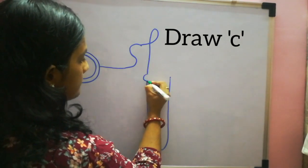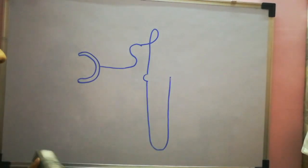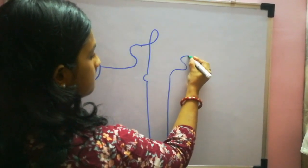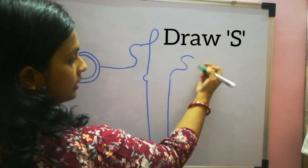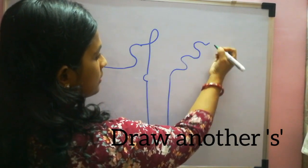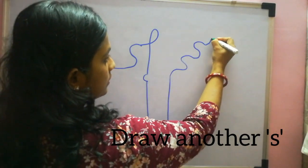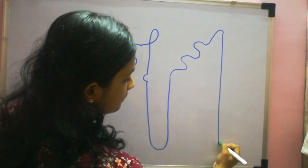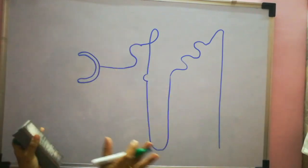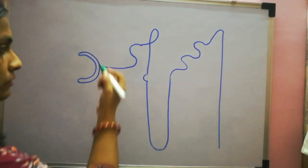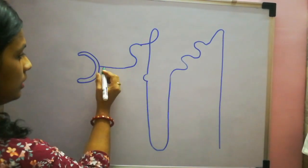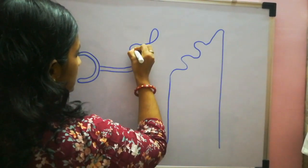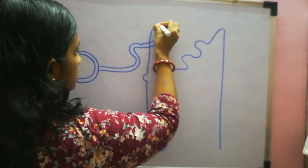From here again make an S — this is looking like an S. Make another S, and then a straight line. So now the outer basic structure is ready. You have to just make it double now — double everything.